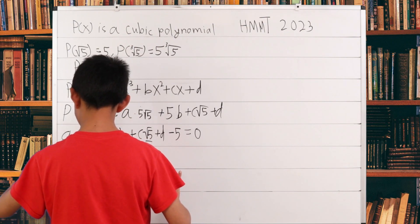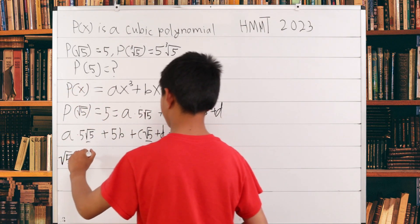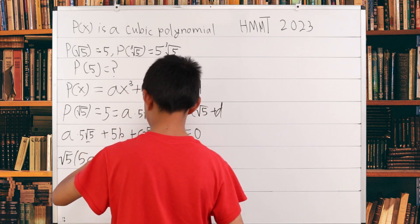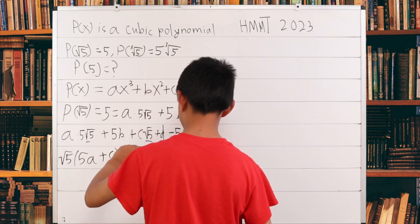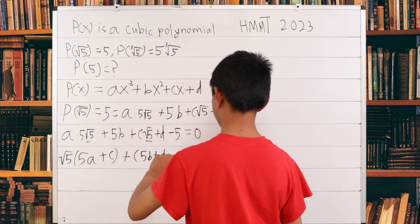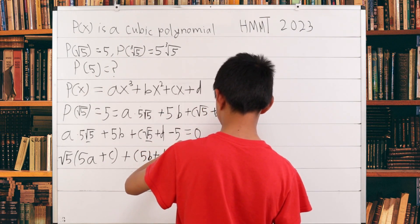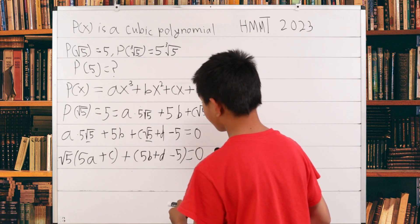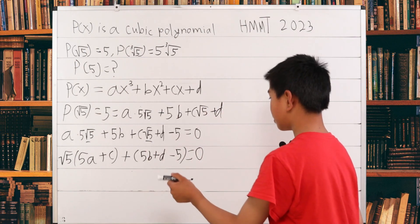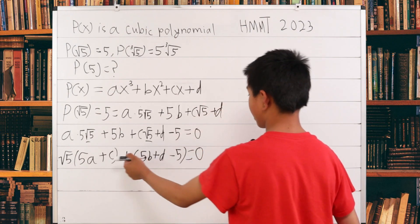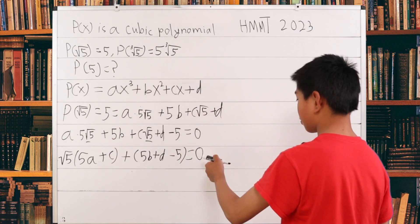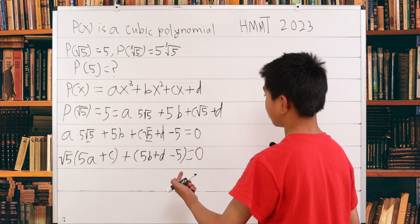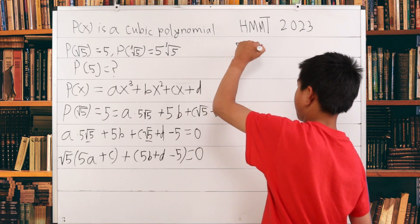When we take it out, what we're left with in the a term is just 5a, and what we're left here is just plus c. All the other terms, you just add them. So √5(5a + c) + (5b + d - 5) = 0. This is a very special case in which they are all integers, and this is the key to this problem. In this case, when something plus something is 0, these two terms in the parentheses have to be both equal to 0.